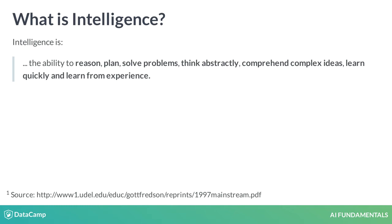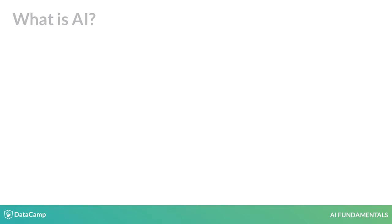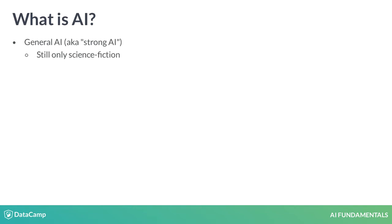Are we there yet? Not really. So, if you're scared of machines taking over the world, don't be — it's not likely to happen in the foreseeable future. But we are making great progress. We usually talk about two major subtypes of AI. The AI that mimics human-like intelligence is what is commonly called artificial general intelligence, or strong AI. And, as we have mentioned, we're not there yet.